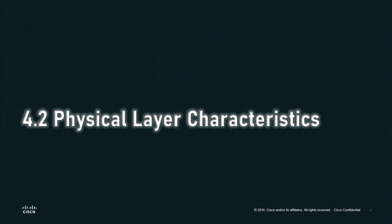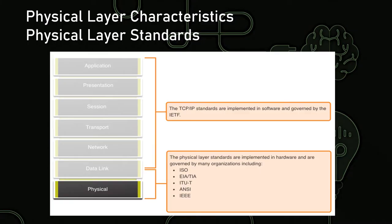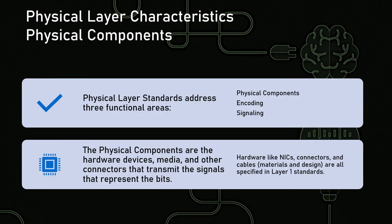Now let's look at some physical layer characteristics — what are some things that automatically identify the physical layer for us? Usually what we're looking at are the standards that are in place from organizations such as ISO, EIA and TIA, the International Telecommunications Union, American National Standards Institute, and the IEEE. The TCP/IP standards, everything pretty much above the midsection of layer two — because remember that layer two is a buffer layer, it has a logical and physical sublayer — these software standards are governed by the IETF, or Internet Engineering Task Force. We address three functional areas at layer one: the physical components, the encoding, and the signaling.